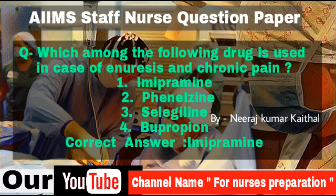Question: Which among the following drugs is used in case of enuresis and chronic pain? Options: Imipramine, Phenelzine, Sulphasalazine, Bupropion. Correct answer is Imipramine.